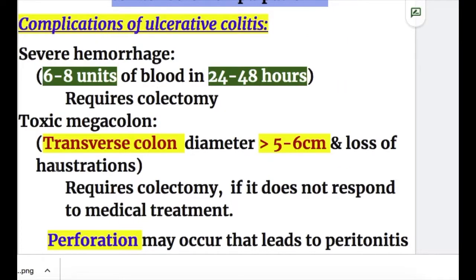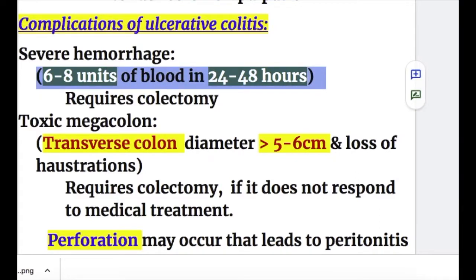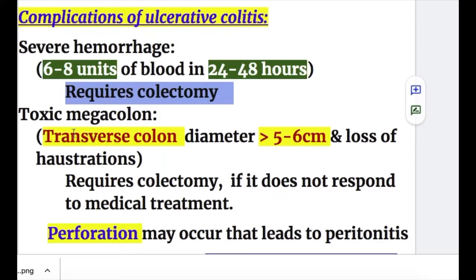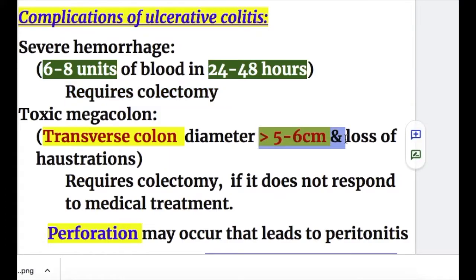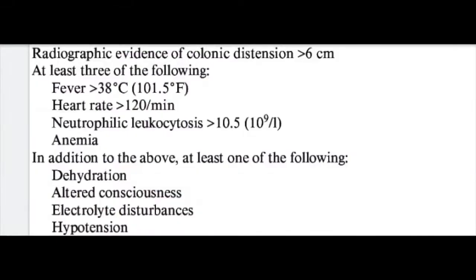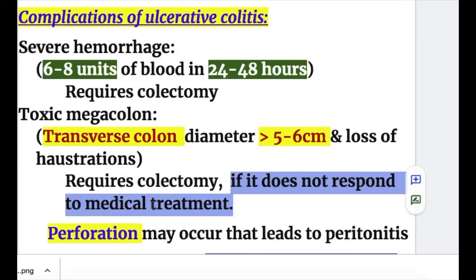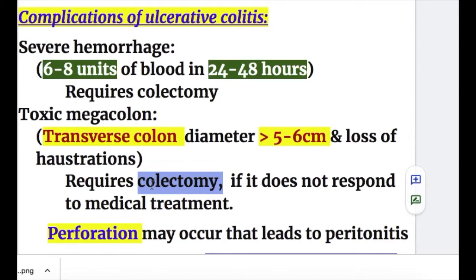Complications of ulcerative colitis include severe hemorrhage — 6 to 8 units of blood in 24 to 48 hours — requiring colectomy. Toxic megacolon is defined as colon diameter more than 5 to 6 centimeters with loss of haustrations. Features include fever more than 38°C, heart rate more than 120 per minute, leukocytosis more than 10.5, dehydration, altered consciousness, electrolyte imbalance, and hypotension. Toxic megacolon requires colectomy if it does not respond to medical treatment.